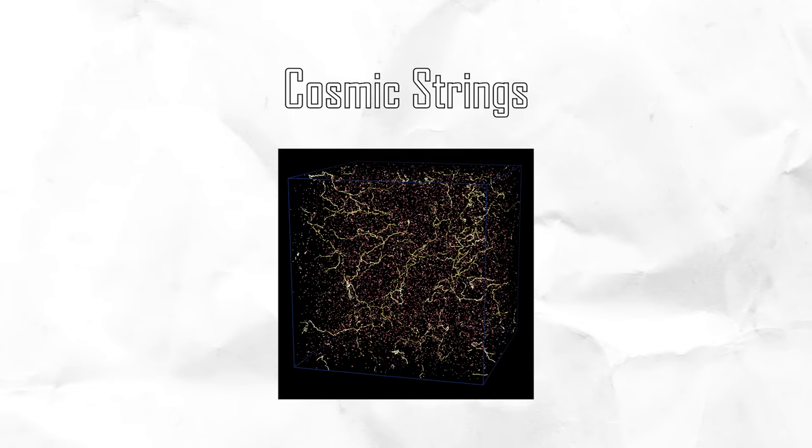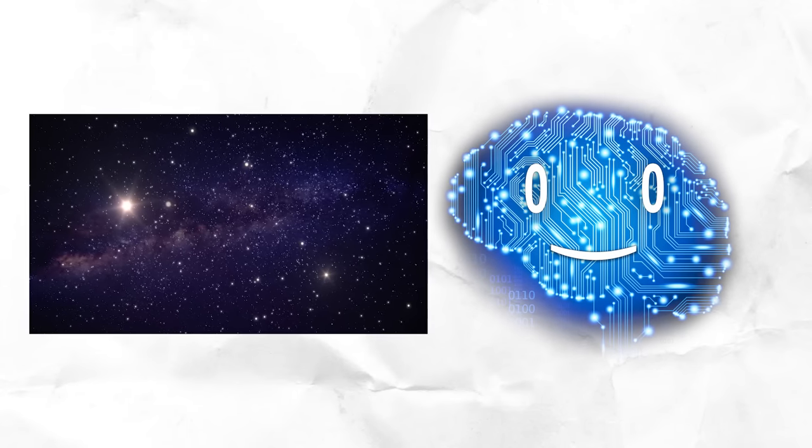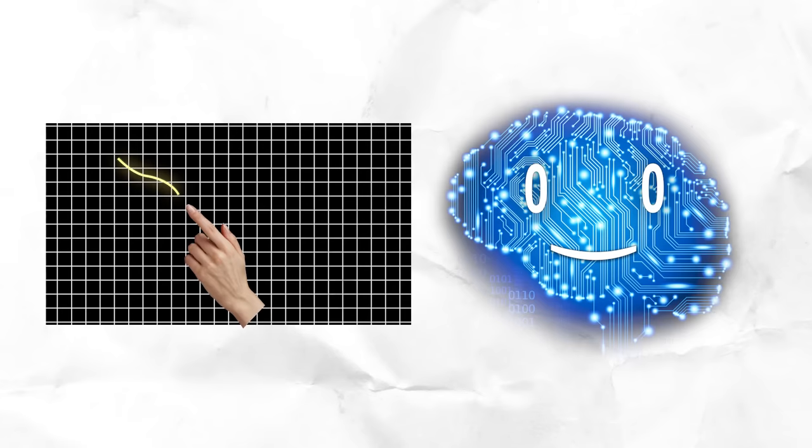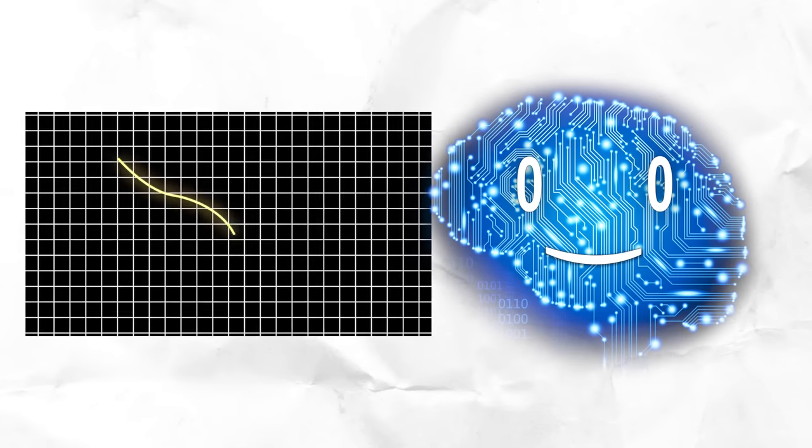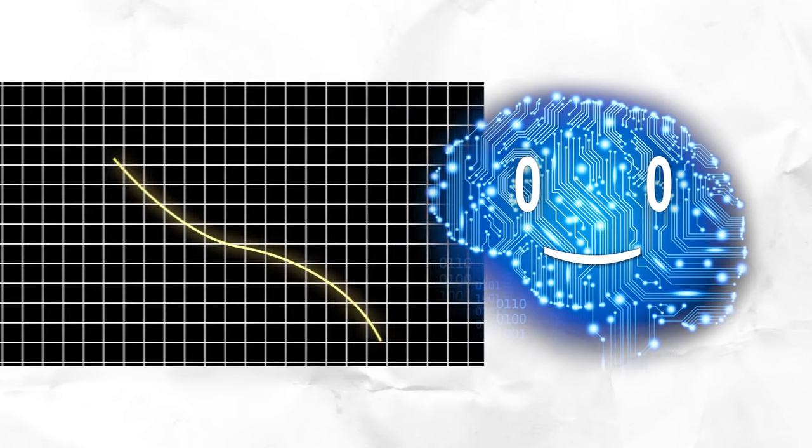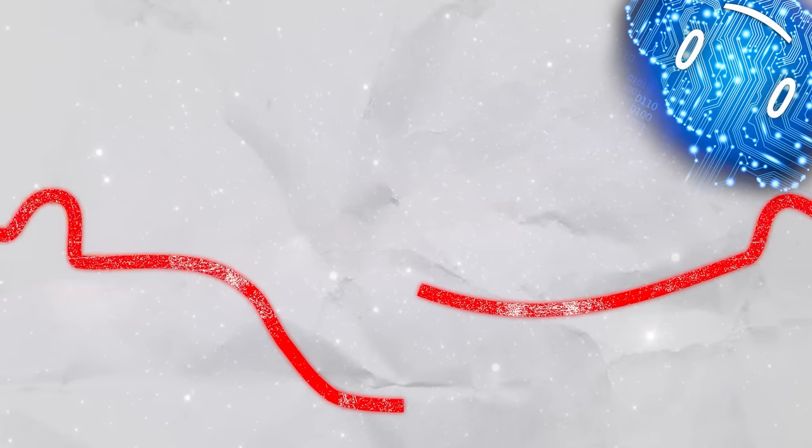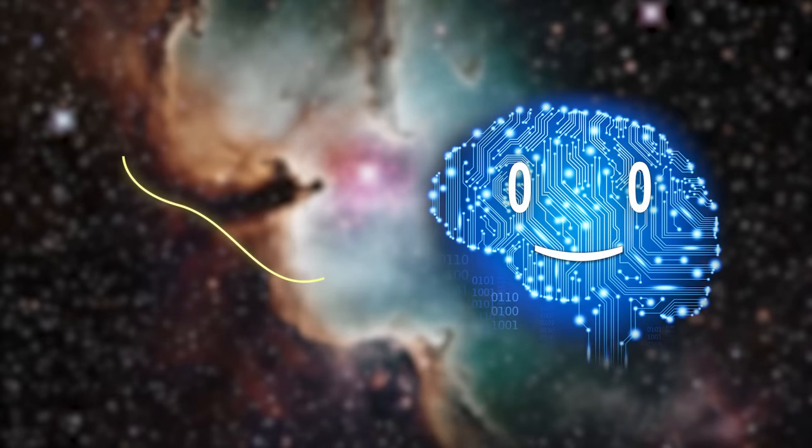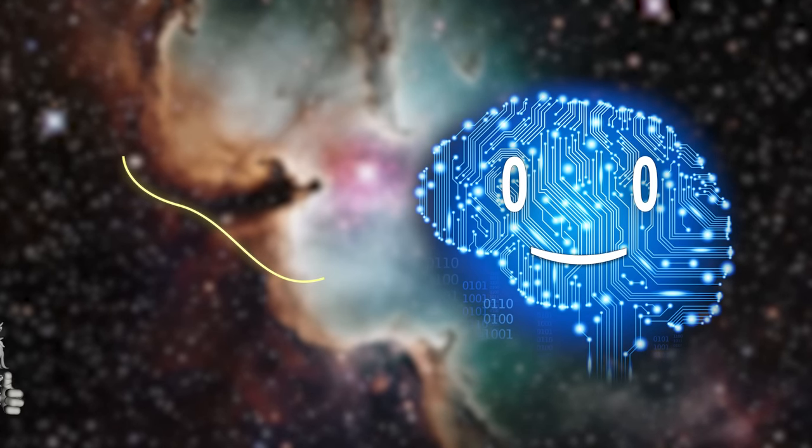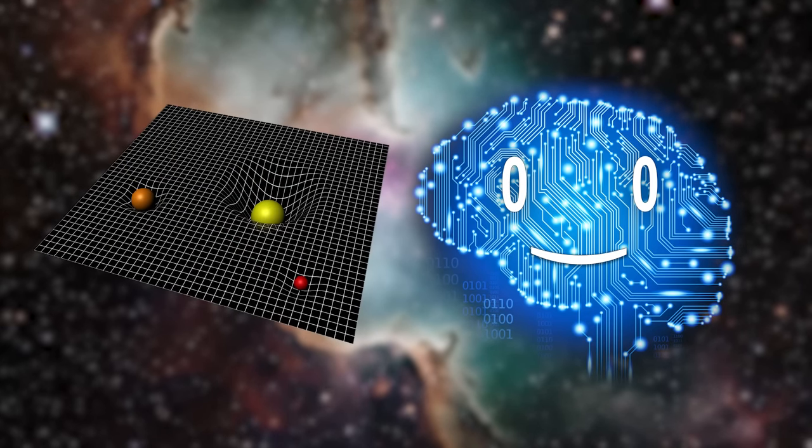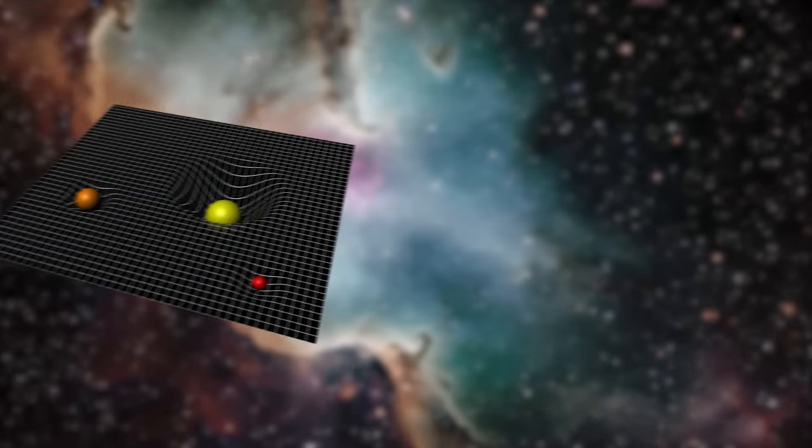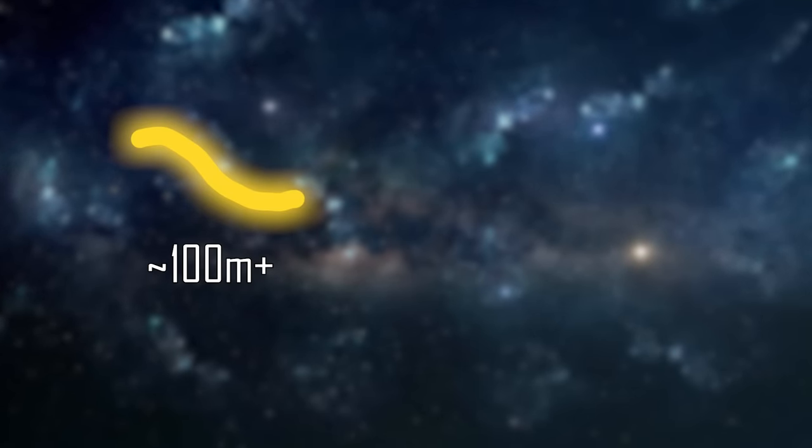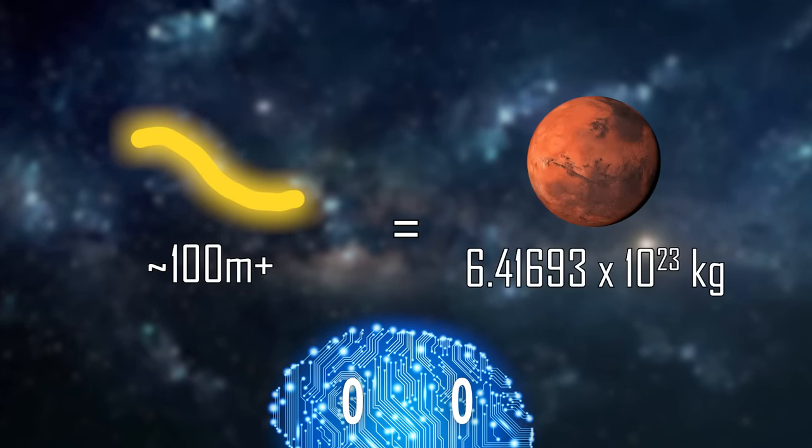Cosmic strings. When the universe expanded, hypothetical wrinkles in the fabric of space-time that were mere centimeters had been stretched to millions and billions of light-years. As time has passed, some of these cosmic strings have been ironed out to be smaller and smaller. Still, they remain, and as we know from Einstein, gravity is caused by the geometry of space-time. Every couple hundred meters of cosmic string would be equivalent to the mass of Mars.